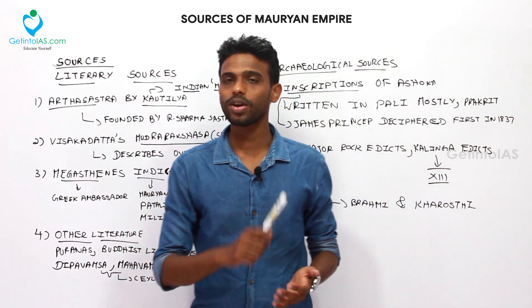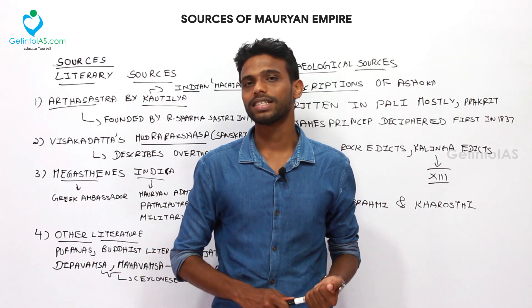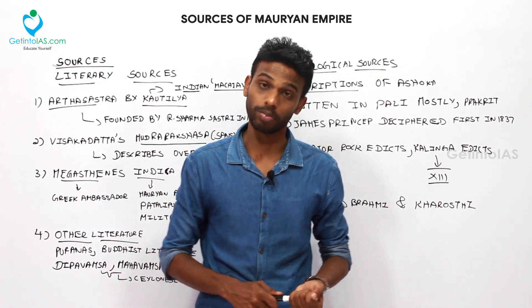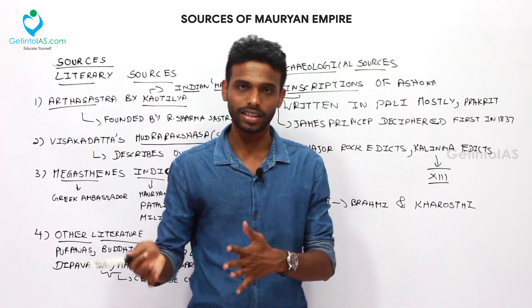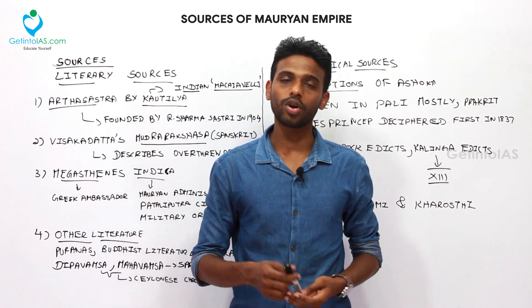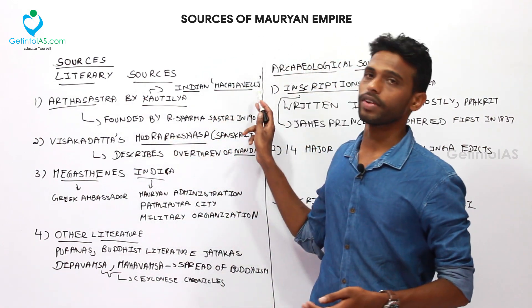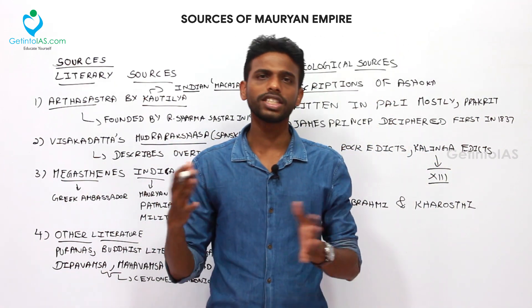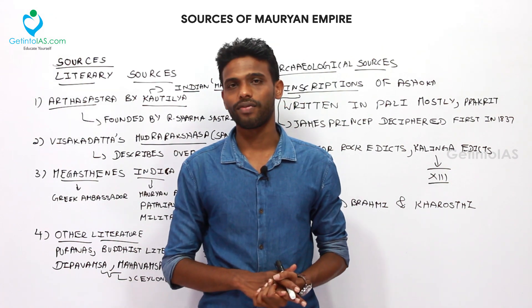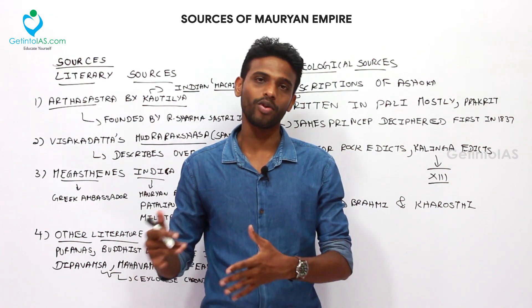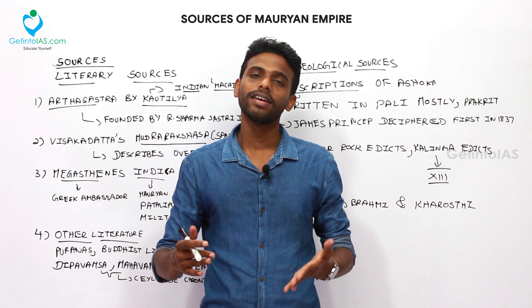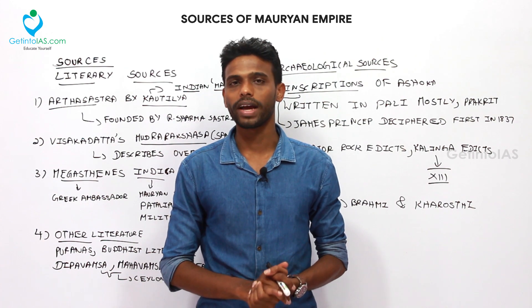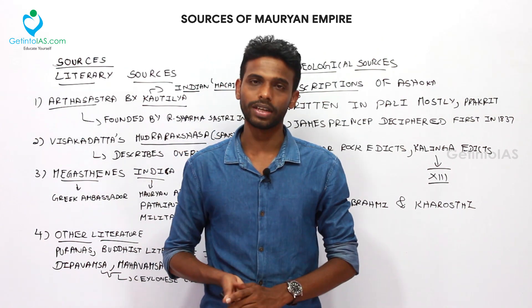The first ruler was Chandragupta Maurya and his chief advisor was Kautilya, also known as Chanakya or Vishnu Gupta — he has three names. He was also called India's Machiavelli. He was a brilliant man behind Chandragupta Maurya's administration, and these facts were found out by archaeologists using many sources.